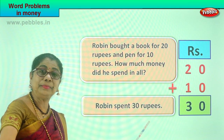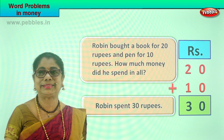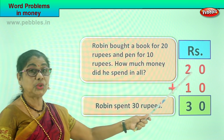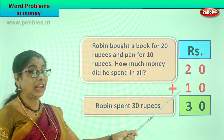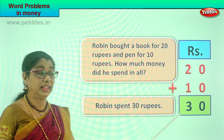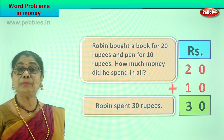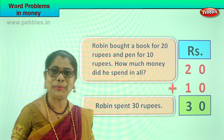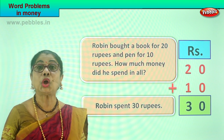So mommy gives Robin 30 rupees from the purse. What is the cost of the book? 20 rupees. What is the cost of the pen? 10 rupees. 20 plus 10 is 30. Robin spent 30 rupees to buy a book and a pen. Did you enjoy the problem? Isn't it interesting and easy?